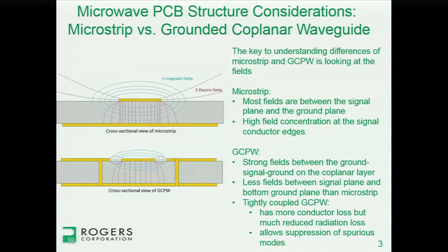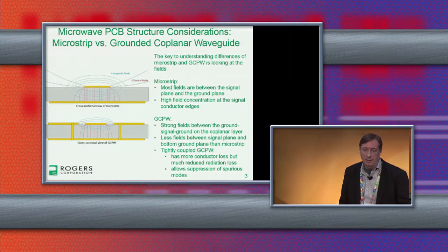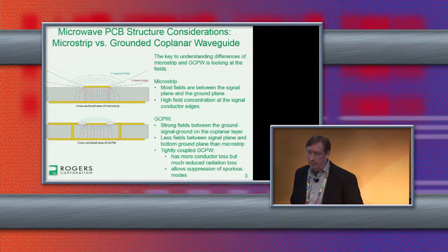For the grounded coplanar waveguide, it's similar in some ways — the fields are using air somewhat. Between the signal and the ground plane there are fields, but they're not quite as strong as in the microstrip, because you have neighboring fields on the coplanar layer between the signal and the adjacent ground planes. When the space between the signal and adjacent ground planes is very tight, it's tightly coupled — you have more electric fields there. This is sometimes done purposely to minimize radiation at higher frequencies and to suppress spurious modes.